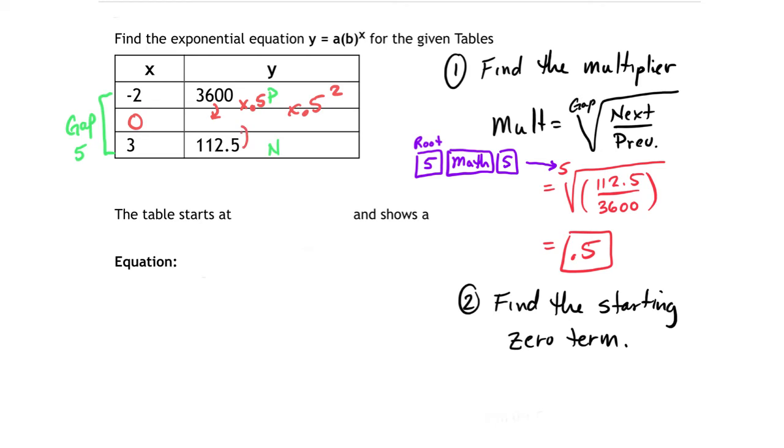Or you can go backwards and divide. You can divide by 0.5 also, but you're going to be dividing by 0.5 three times to get from three to the zero, so you'll be divided by 0.5 to the third power. Now both of those will give you the right answer, it doesn't matter which way to go.